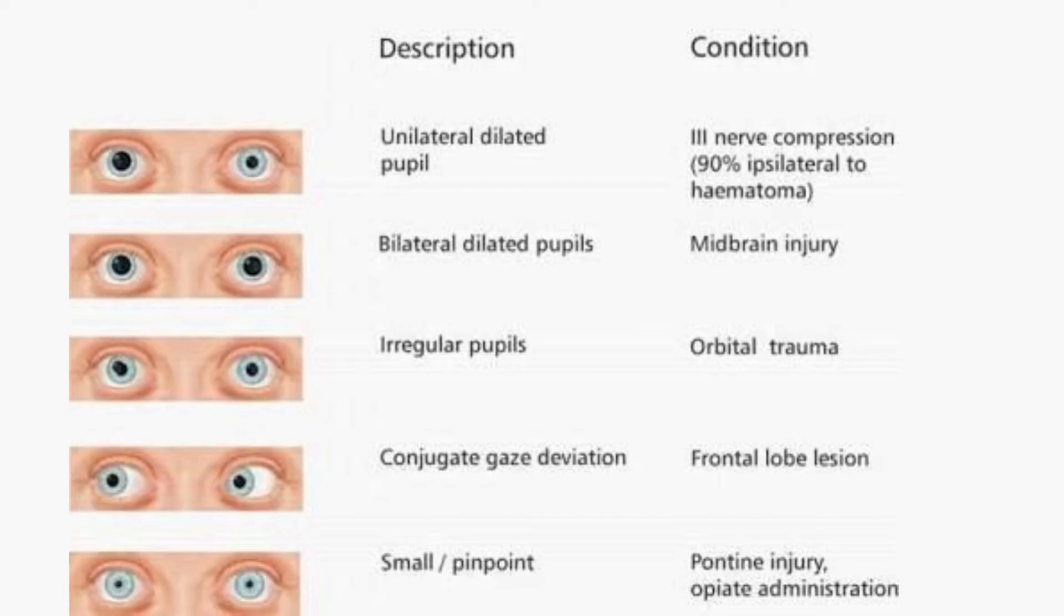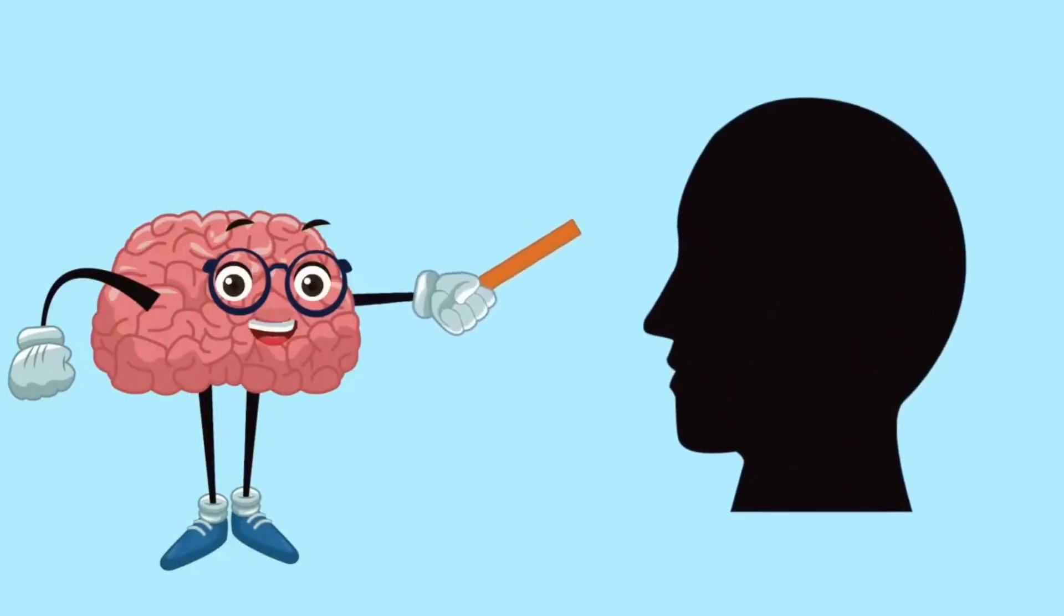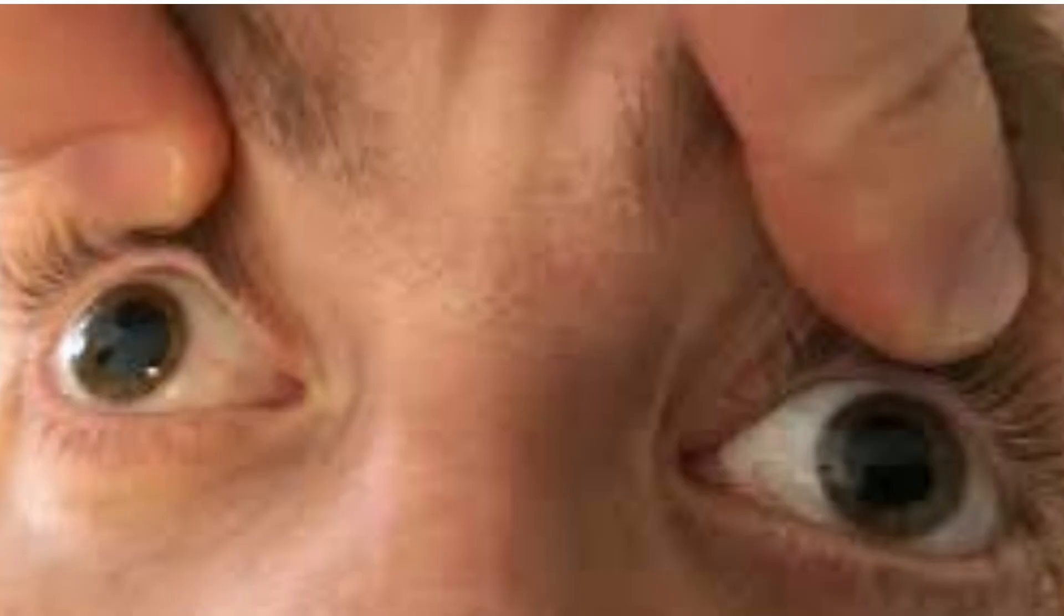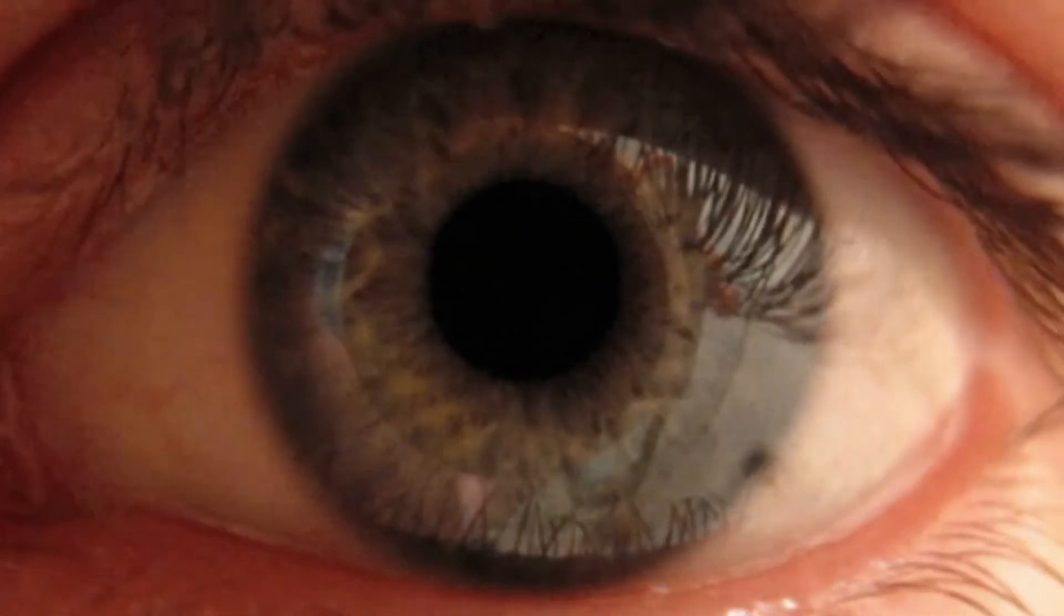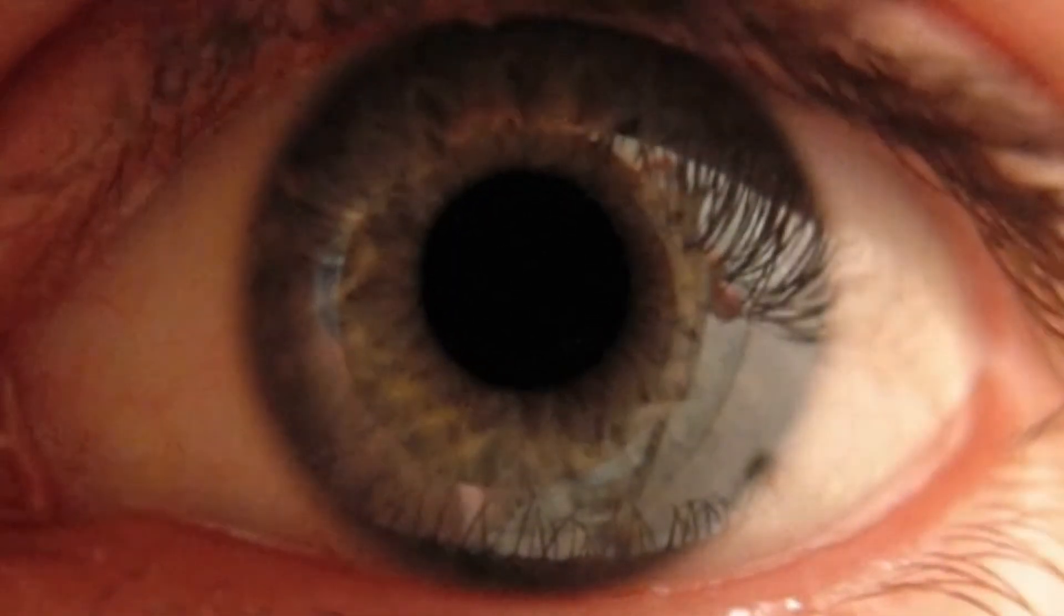Pupillary response to bright light evaluates cranial nerves 2 and 3 and should be present in both eyes. Most pupils in brain death are non-reactive and mid-position. Round, oval, irregular, or dilated pupils are compatible with brain death, however, provided that they are not reactive.